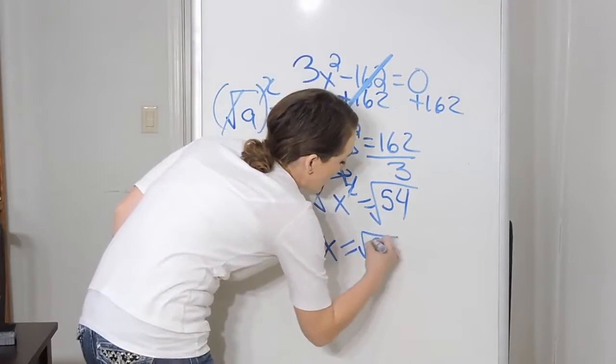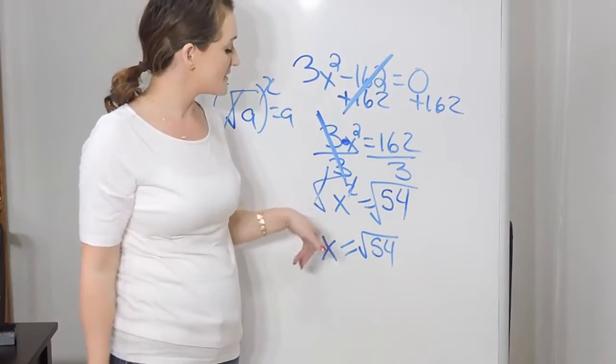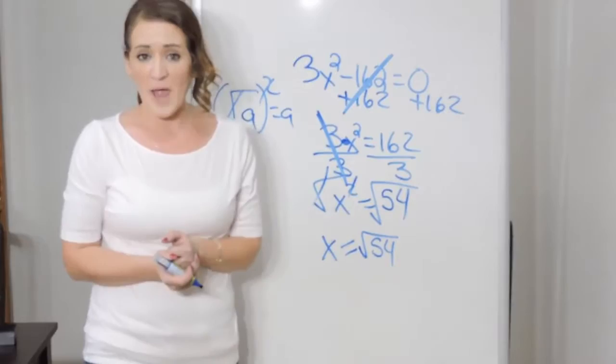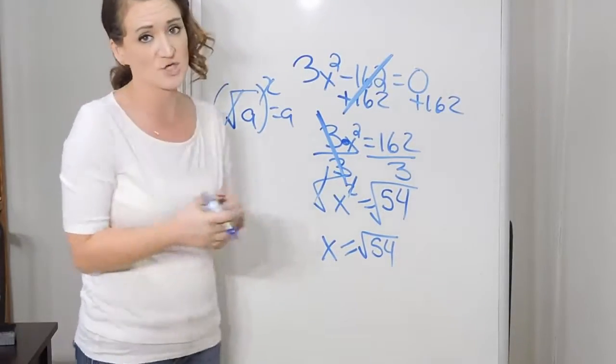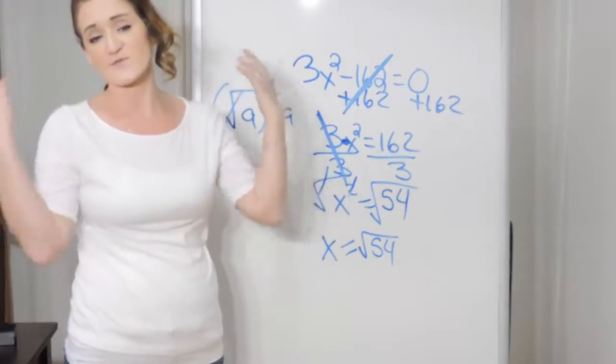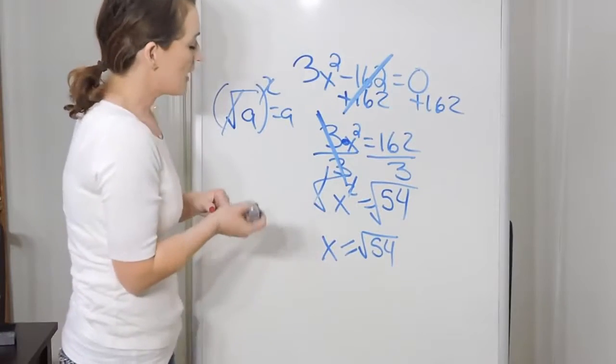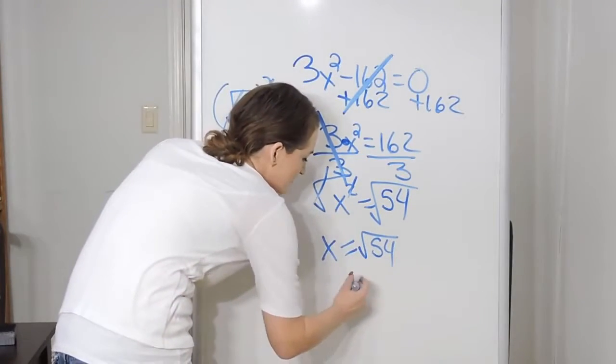On the right-hand side, I have the square root of 54. Now we do need to see if we can simplify that radical. We need to see if we can break it down using some kind of factor of a perfect square. So 4, 9, 16, 25, 36, 49, and so forth. Looking at 54, I believe 54 is 9 times 6.